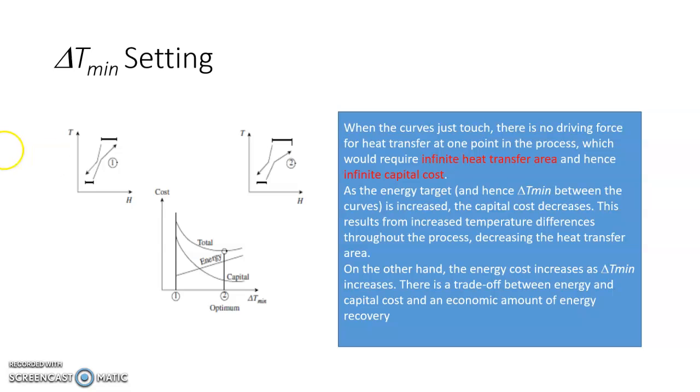So to decide delta T minimum, you have to find out the value of energy and capital costing for various delta T minimums. And for every delta T minimum, you find out the total costing and once you find the total costing, you can easily identify which delta T minimum works well. So this is known as super targeting. We'll see this as we proceed further.